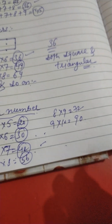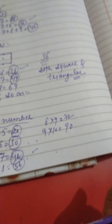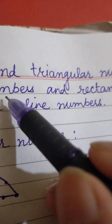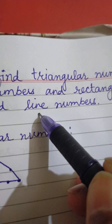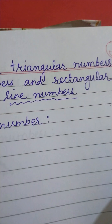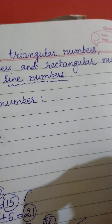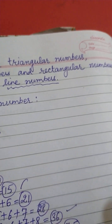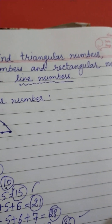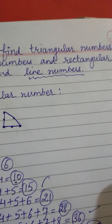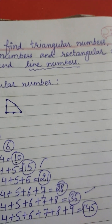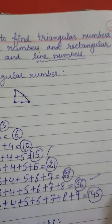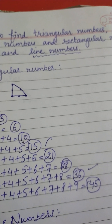The last concept is line numbers. We can arrange all numbers in a line, so in maths all numbers are line numbers — there is no limit, from 1 to unlimited. All numbers in maths are line numbers because all numbers can be arranged in a line. Hope you have liked the topic and understood it. Thanks, and have a beautiful day ahead.